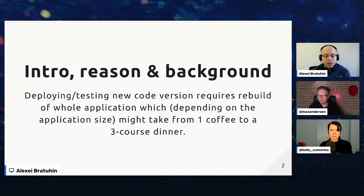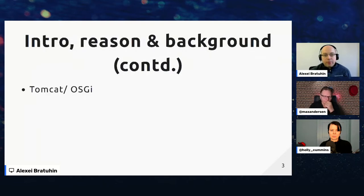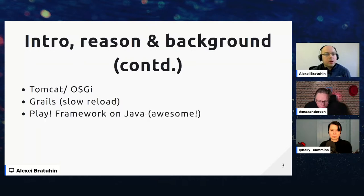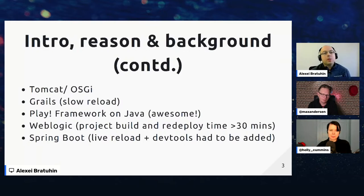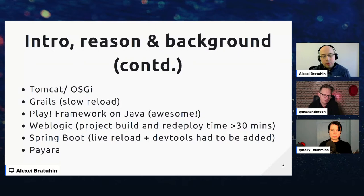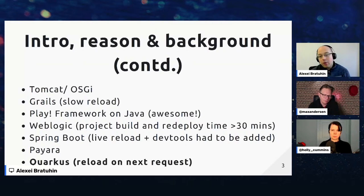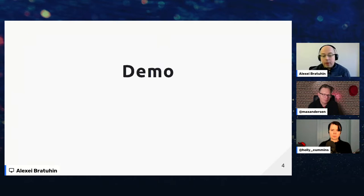Anything from one coffee to a three-course steamer — those are things which don't make us productive. I started with Tomcat and OSGi, then Grails which had some hot reload but was slow. I really enjoyed Play Framework on Java, and WebLogic — that's the project that took 30 minutes. Spring Boot with some instrumentation can bring hot code replacement, but it just wasn't my flavor. I've done some work with Payara and then changed to Quarkus.